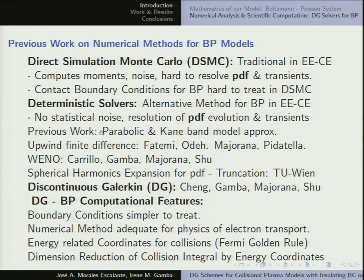A brief summary of the work: the first works were finite difference by Fatemi and Ode and also a paper by Majorana and Pidatella. Then there is the work of Carrillo, Gamba, Majorana, and Shu using ENO (essentially non-oscillatory) schemes. There is also a school of people at TU Vienna working with spherical harmonics expansions for the Boltzmann equation. And then, with the line of work of my former PhD advisor and her collaborators — Chen, Gamba, Majorana, and Shu — they use continuous Galerkin focusing on the transport part of the electron transport.